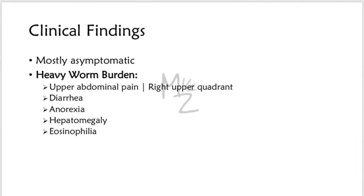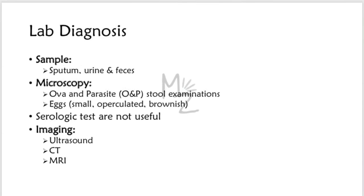Most infections are asymptomatic. In patients with a heavy worm burden, upper abdominal pain occurs — specifically in the right upper quadrant where the liver lies. Anorexia is seen. Hepatomegaly and eosinophilia can also occur.